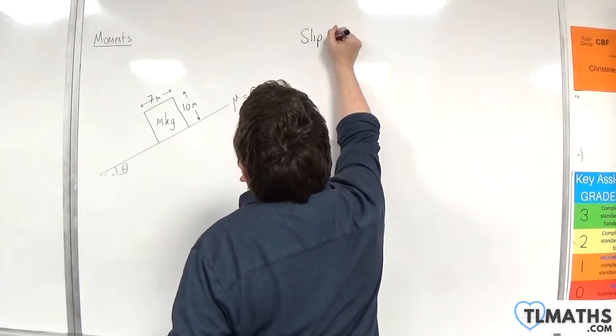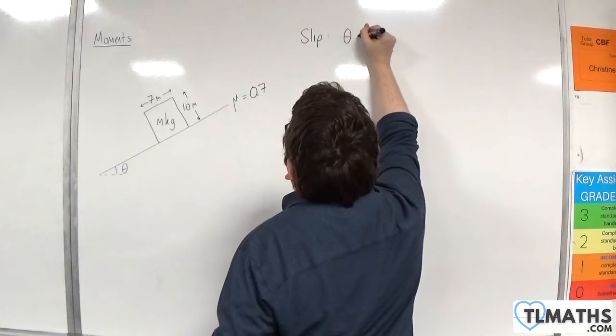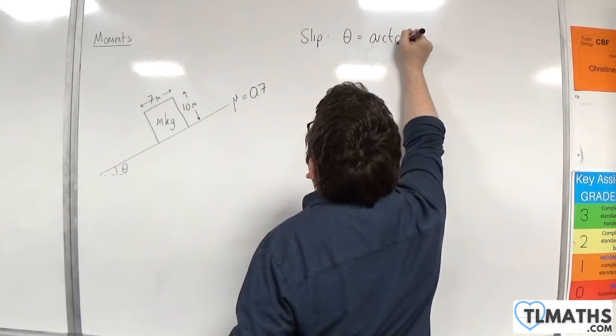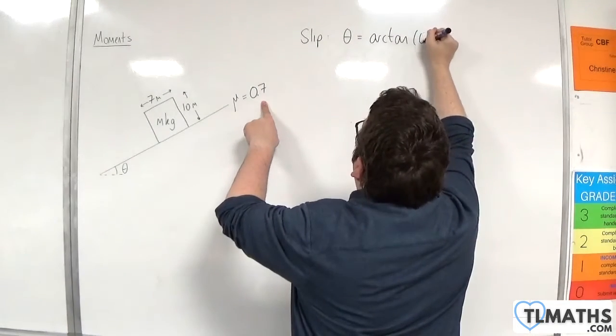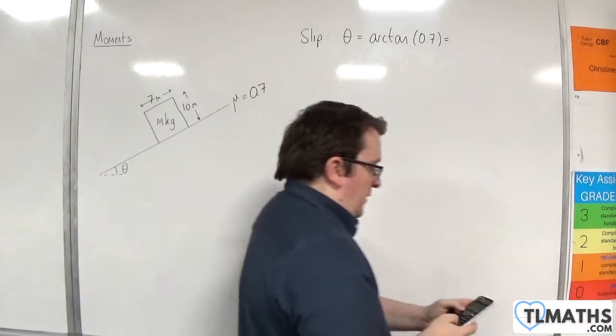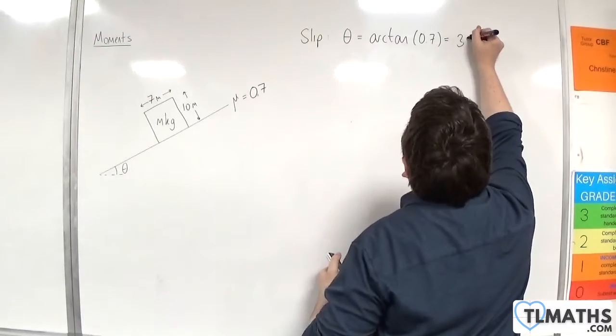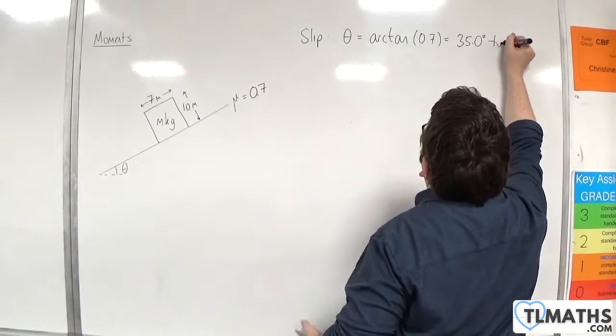So we can work out the angle at which it will slip down the slope, and that will be theta, which is arctan of the coefficient of friction, so 0.7. So the arctan of 0.7 is 35.0 degrees to 3 sig fig.